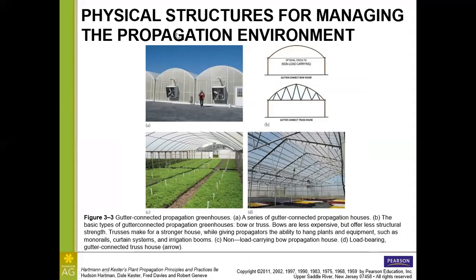Here on the top left we have some gutter-connected greenhouses — they share a wall in between and have a gutter running between them. On B at the top is an example of the gutter-connected bow house. When it says non-load-carrying, this is typically going to refer to snow load, because you can get quite a bit of weight on top of the greenhouse and it can collapse. If you need the roof to be load bearing, then the gutter-connected truss house example at the bottom of B would be a better choice.